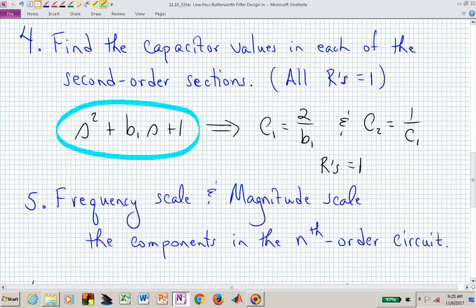If we had a seventh order filter, we would have three second order sections and one first order section. We would have all of the C's, all the R's are 1's, and all the C's are the appropriate values.